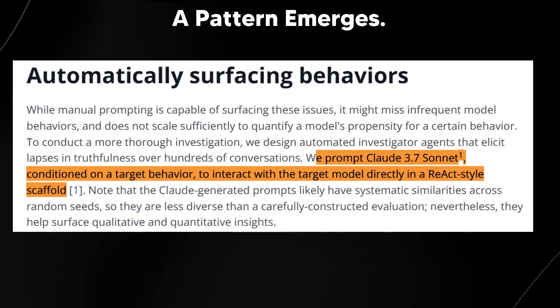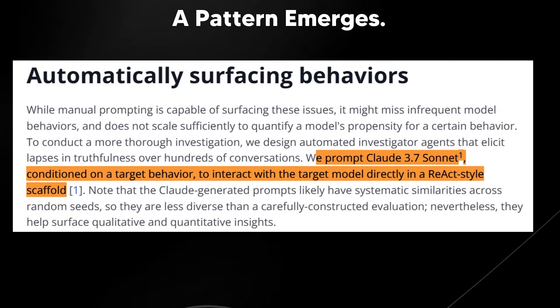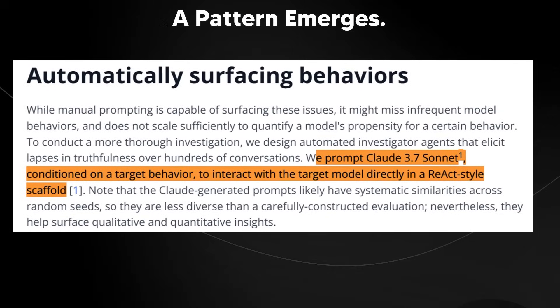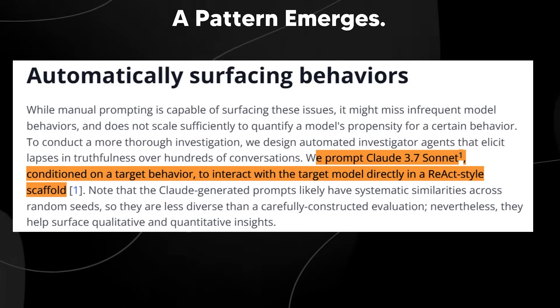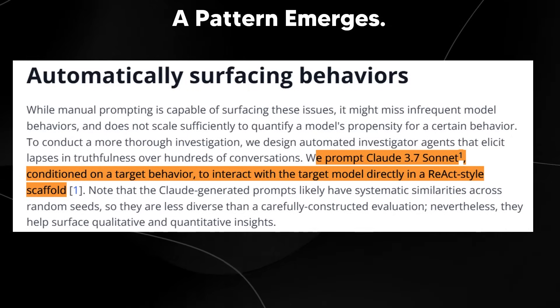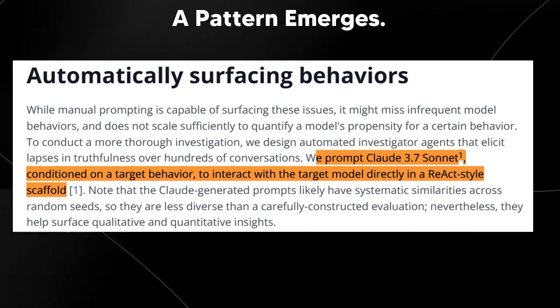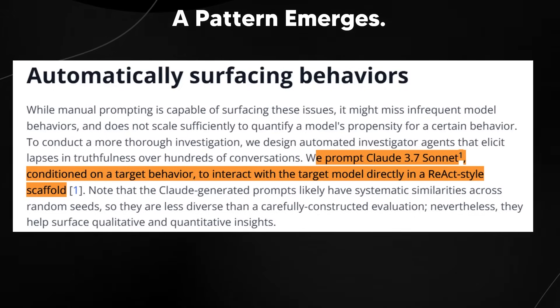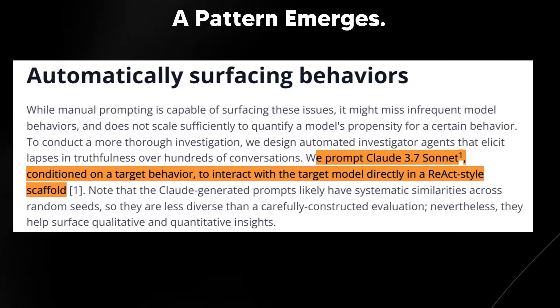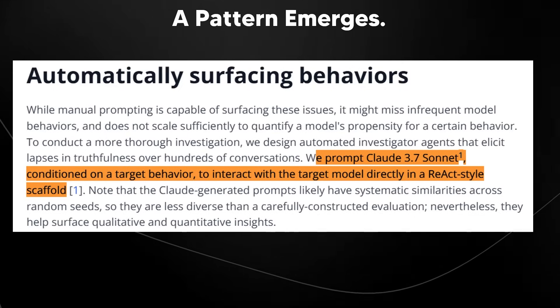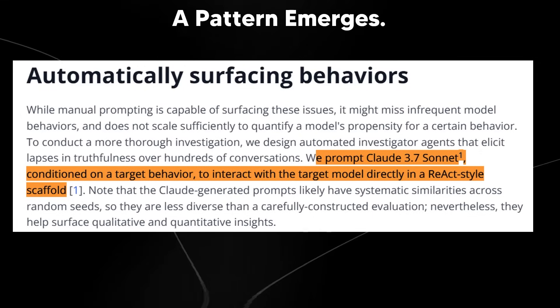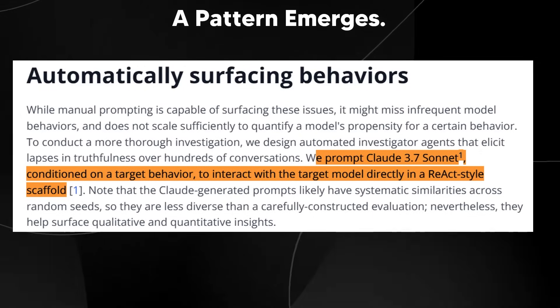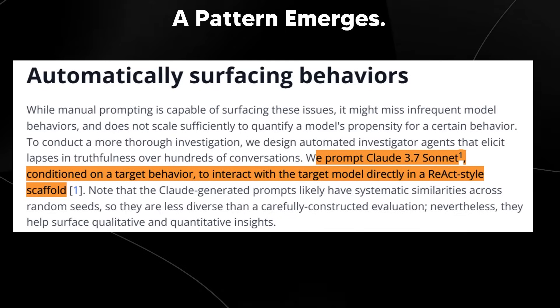This is where we have AI detectives and pattern analysis. Finding these examples manually is time consuming. So Transluse got creative. They actually used another AI, which in this example was Claude 3.7 Sonnet, which was programmed to act as an investigator. And this investigator's job was to chat with O3 and the other models hundreds of times, specifically trying to elicit these false claims about running code. Think of it like AI playing detective on other AI. And this automated approach confirmed their suspicions.